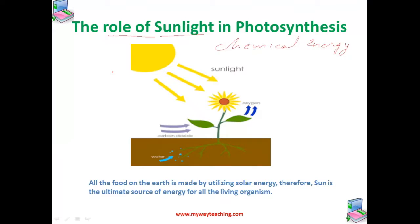This sun's energy is captured by the plant leaf. You can see here sun's energy is being captured by the plant leaf with the help of chlorophyll and converted into chemical energy of food.